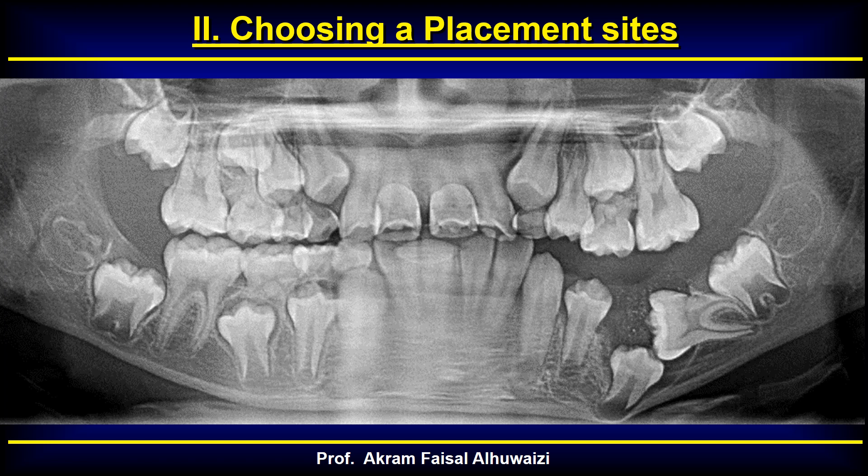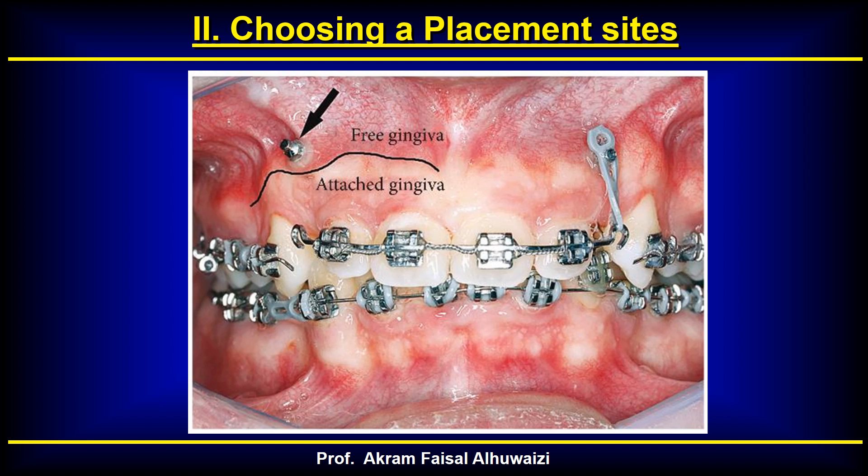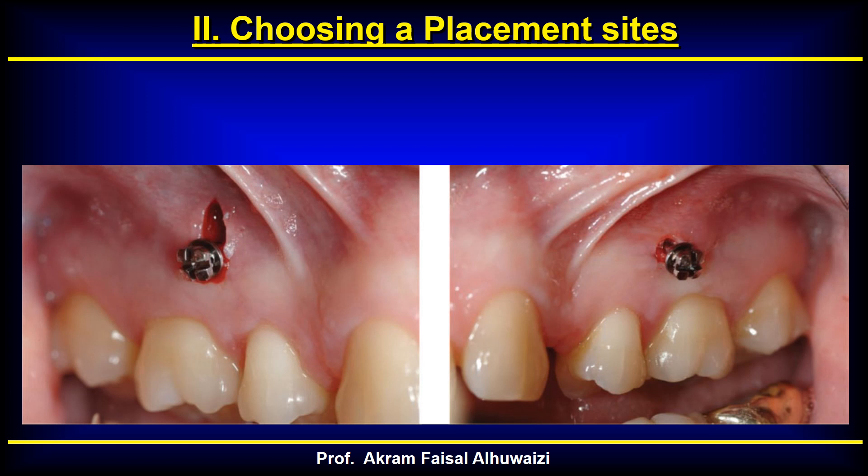You should avoid sites where teeth are erupting, deciduous roots are resorbing, or permanent teeth roots are forming — all these sites have active bone remodeling and will not be stable places to implant a TAD. It's always advisable to place TADs where there is no bone remodeling occurring. Also, try to place them in the attached gingiva and stay away from the free gingiva — inserting into movable gingiva can cause tearing, more bleeding, ulceration, and even implant failure.